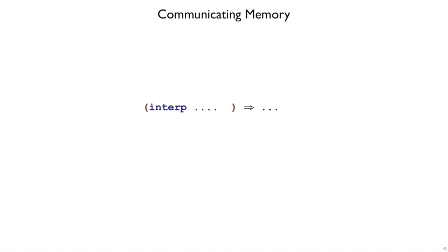And by communication, I mean arguments to interp and results of interp. Currently, our interp takes an expression and produces a value, but now we have this extra piece of information, this view of memory, that needs to go into interp as an argument.